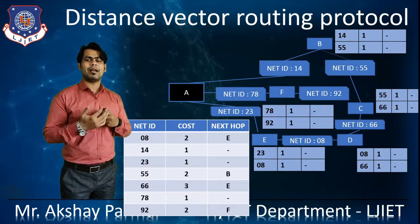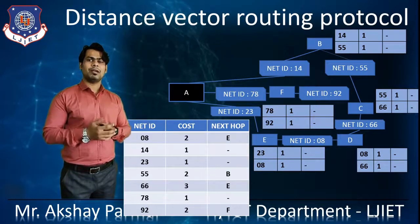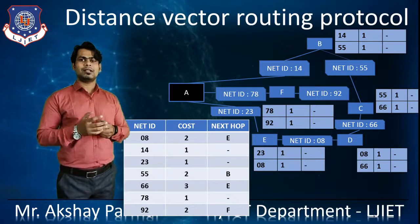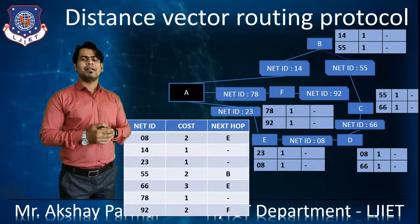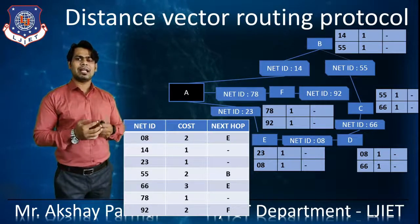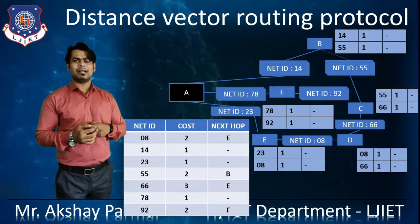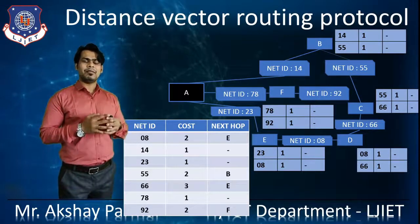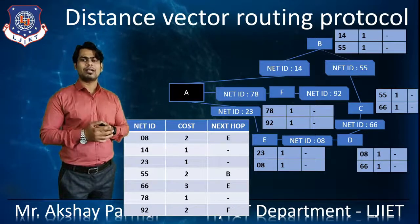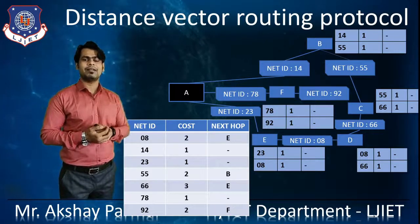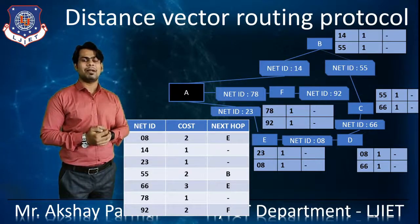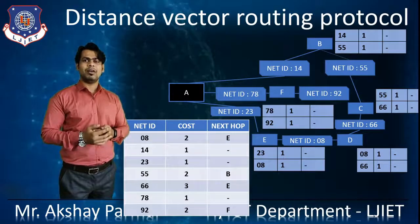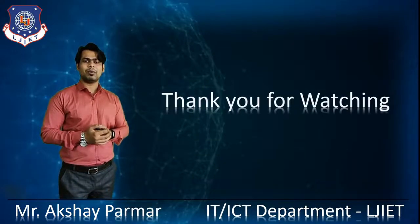That's how we are updating the routing table of a particular router, taking router A as an example. In the distance vector routing protocol, routing tables are maintained and used to send packets from sender to receiver by selecting the best path. We have seen in brief how routing tables are created and updated. That's all about the distance vector routing protocol. Thank you for watching.